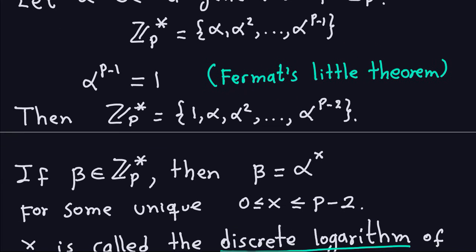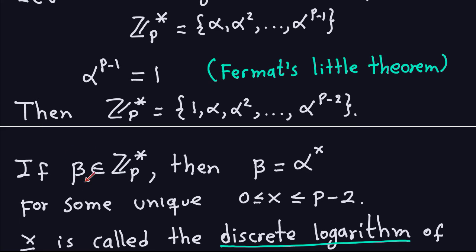Now I'm going to take another number beta in Cp-star, which doesn't have to be a generator — alpha has to be, but beta doesn't. Since beta is in this group, it must appear in this list, meaning it has to be a power of alpha: either alpha to the zero, alpha to the first, alpha to the second, up to alpha to the p-2. So beta equals alpha to the x, where x is between zero and p-2.